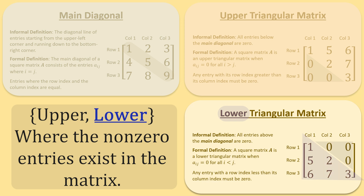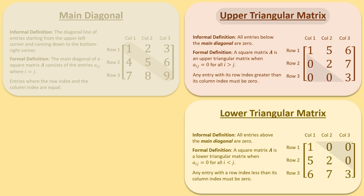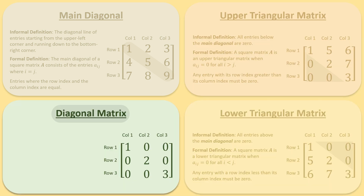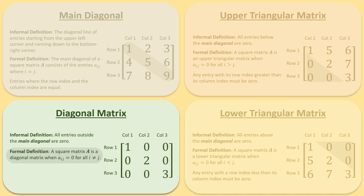A square matrix A that is both upper and lower triangular is a diagonal matrix. Here, every entry outside the main diagonal must be zero. Formally, a square matrix A is a diagonal matrix when the entries A sub i j are zero for all i not equal to j. A diagonal matrix only has nonzero entries on its main diagonal.